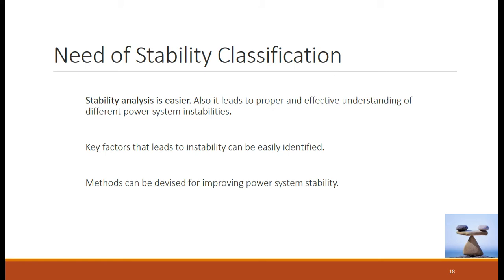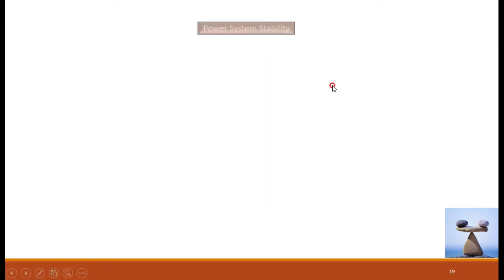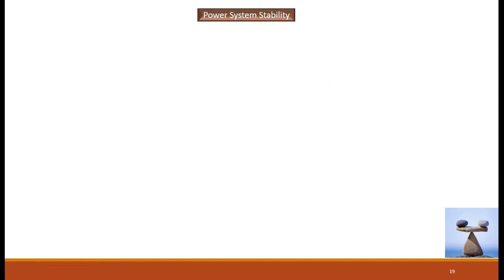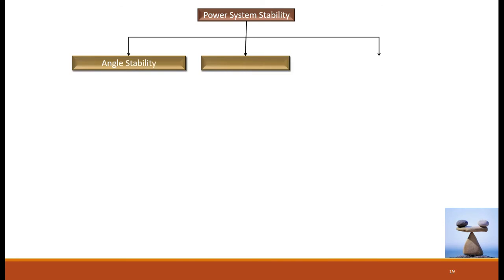That is why methods can be devised for improving the power system stability. The power system stability is classified basically into three different types: the first one is angle stability, the second one is frequency stability, and the third one is voltage stability. These are the broad classifications of the power system stability studies.